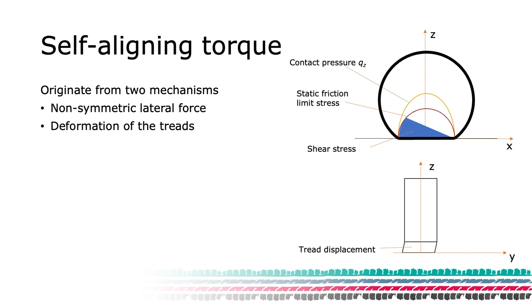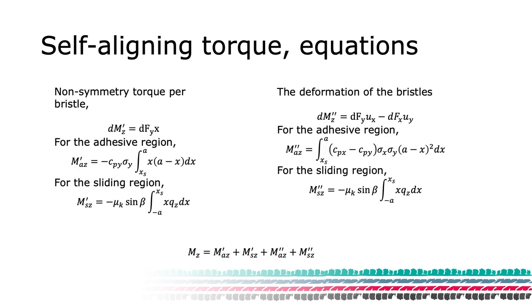The second basic mechanism that generates the aligning torque is that the bristle will bend and create a lever to generate an aligning torque. This will take place both in the lateral and the longitudinal directions.